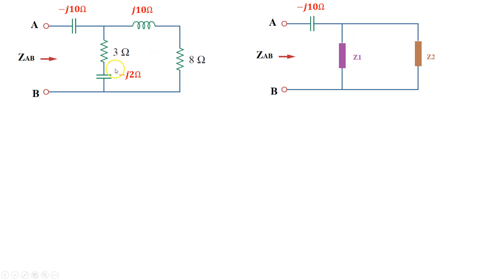z1, which is a series network of 3 and -j2, and z2 is a series network of j10 ohms and 8 ohms. Impedances in series just add up just like how resistors would add up when they are in series.